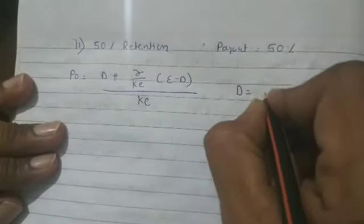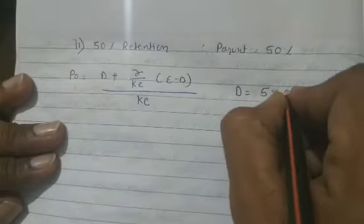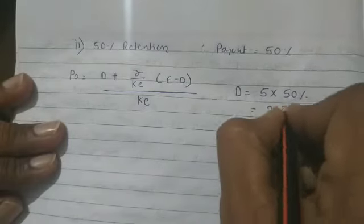Second situation: 50% retention means payout ratio is 50%. Using Walter's formula: D = EPS × payout = 5 × 50% = 2.5. So P0 = 2.5 + (0.15/0.10) × (5 - 2.5) / 0.10.